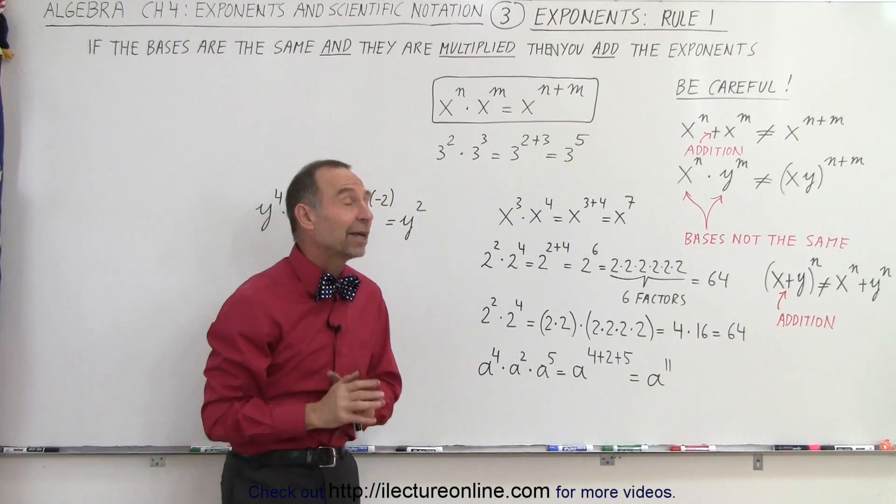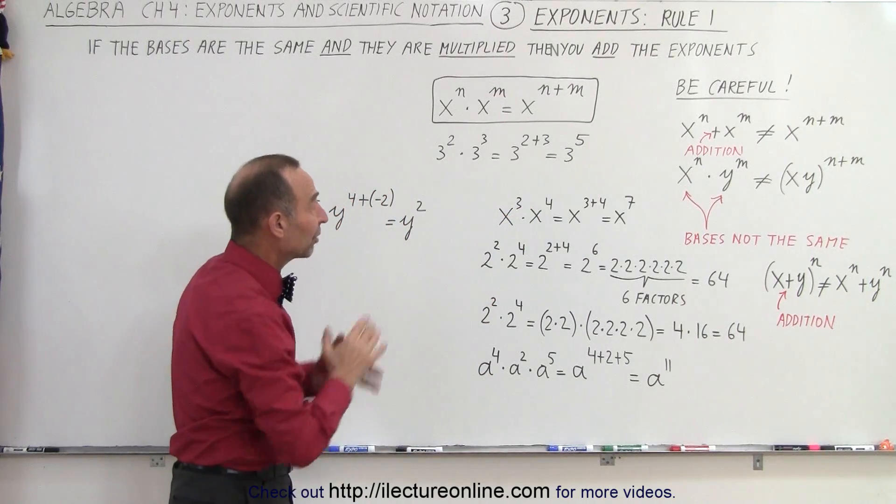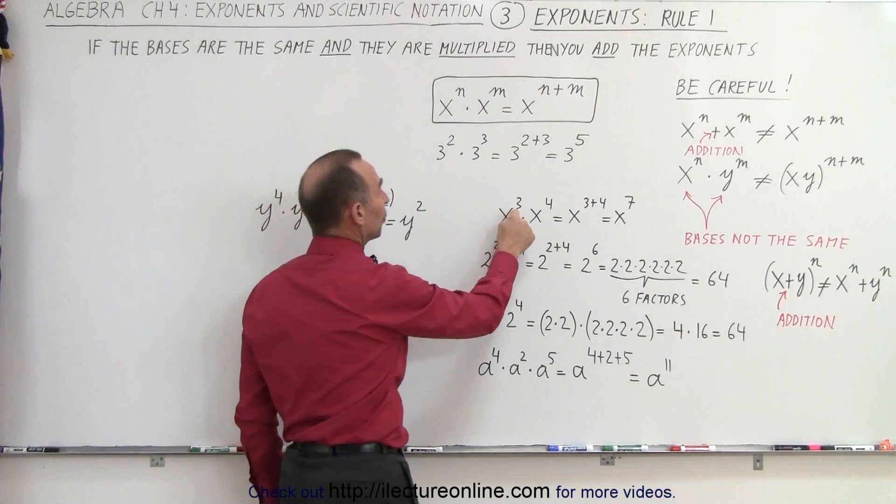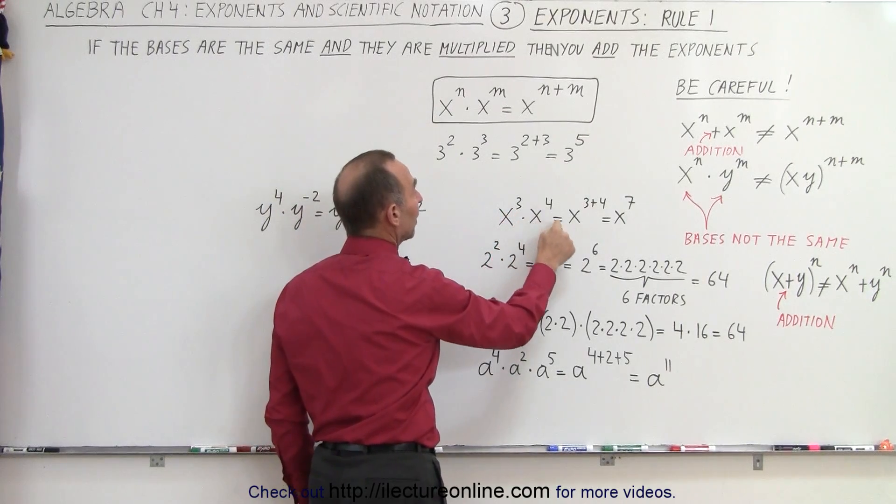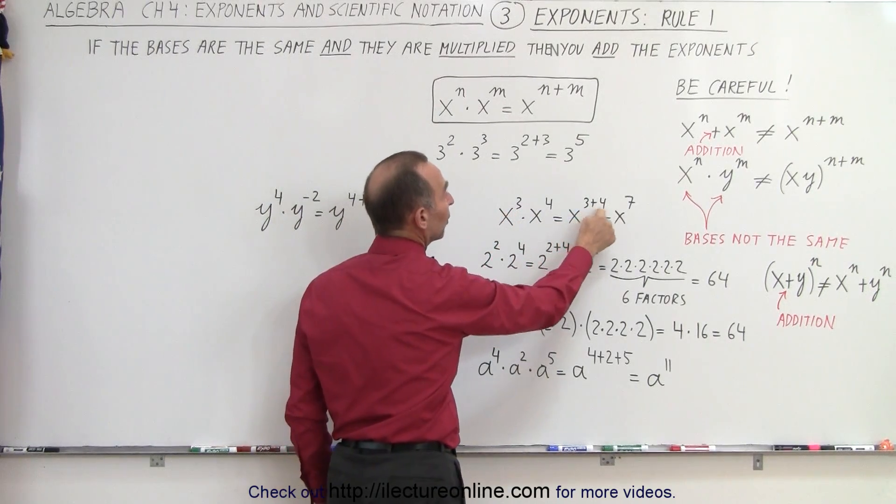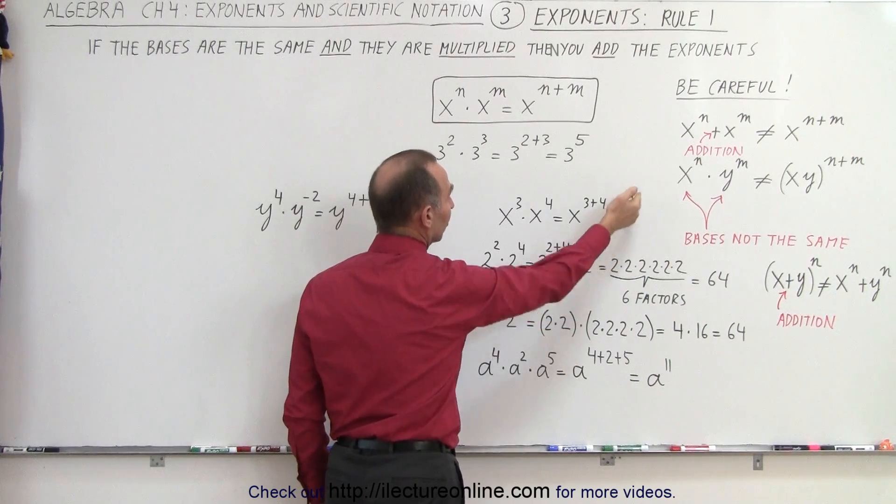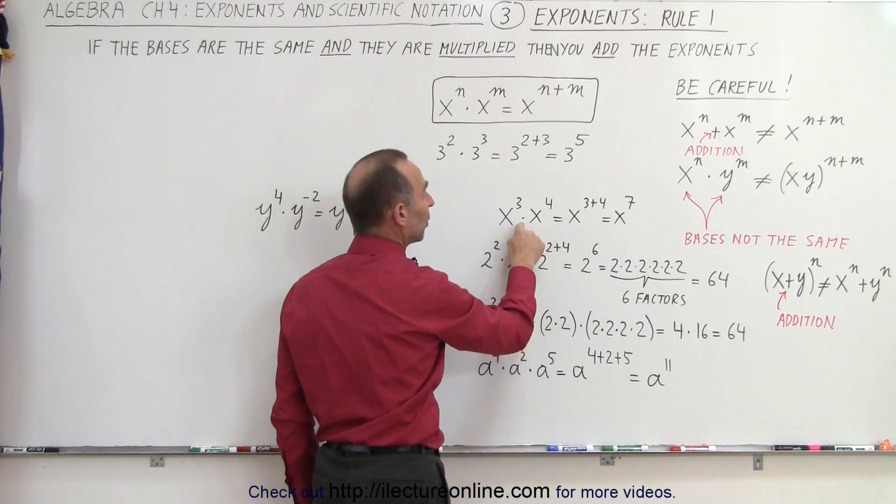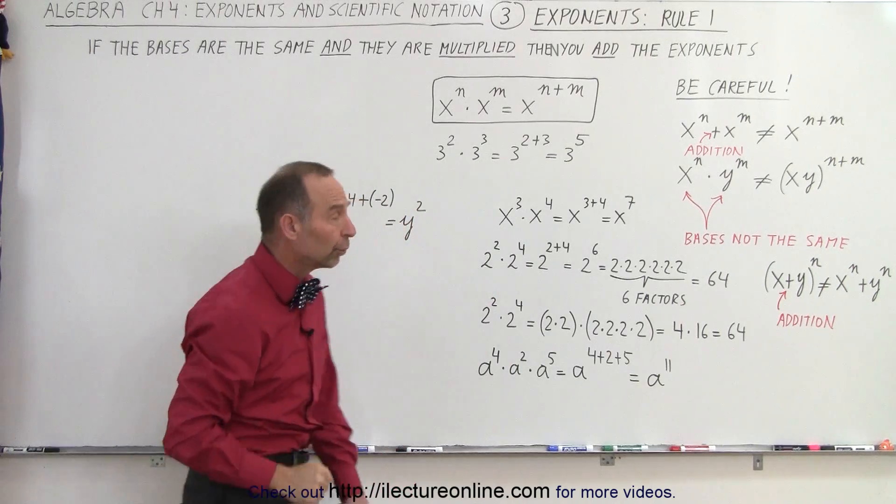Three very common mistakes. Try not to make those. Here we have some more examples. For example, x to the third power times x to the fourth power is equal to x to the three plus four, which adds up to seven. So it's equal to x to the seventh power. Again, the bases are the same and we're multiplying, so we're able to use that rule.